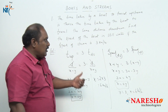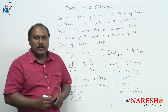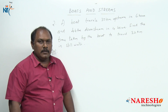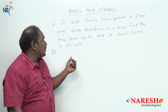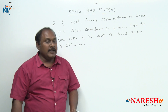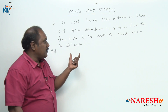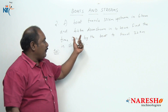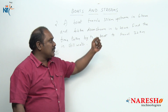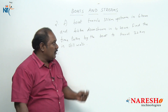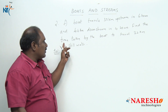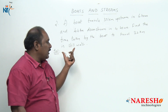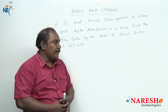Now let us look at the second problem. A boat travels 30 kilometers upstream in 6 hours and 44 kilometers downstream in 4 hours. Find the time taken by the boat to travel 32 kilometers in still water.